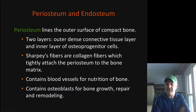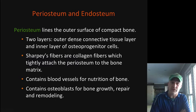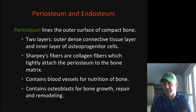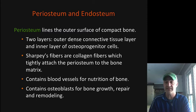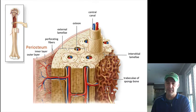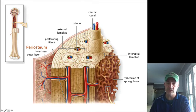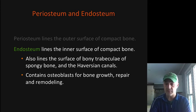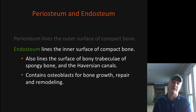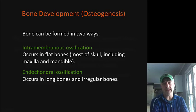The periosteum is connected to the underlying bone by Sharpey's fibers. There are openings in the periosteum called nutrient foramina where blood vessels enter. Beneath the periosteum there are osteoblasts that allow new bone to be laid down or bone to be repaired if damaged. There is also an endosteum — a much thinner inner lining — which also contains osteoblasts and osteoclasts, enabling bone remodeling and repair.